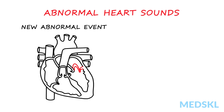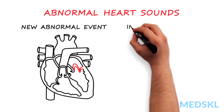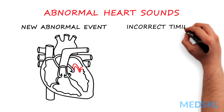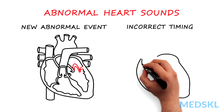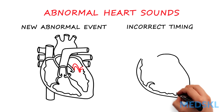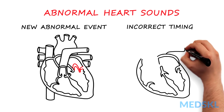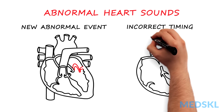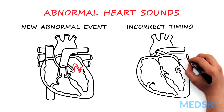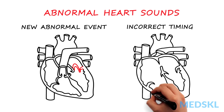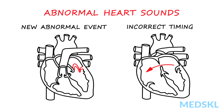A third mechanism causing an abnormal heart sound is incorrect timing of otherwise normal cardiac events. For example, abnormal splitting of the second heart sound, as seen in an ASD.